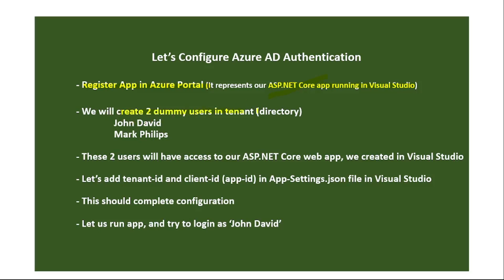Then we will create two dummy users in the Tenant. We will register this app in Tenant only, and also we will add these two users in Tenant only. These two users will have access to our ASP.NET Core Web App. In order to configure Azure AD authentication, we will need to add Tenant ID and Client ID — that is App ID — in the AppSettings.json file in Visual Studio. That should complete our configuration.